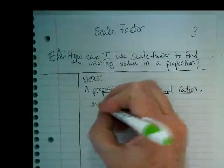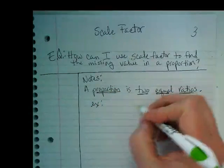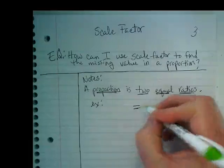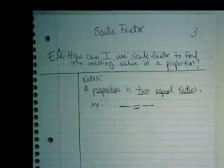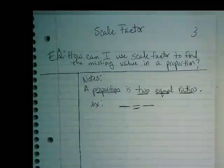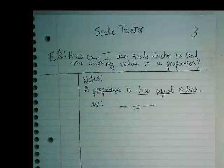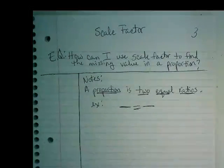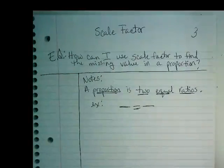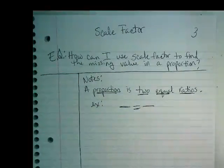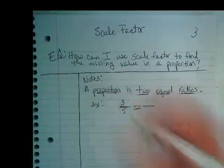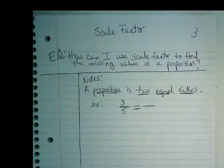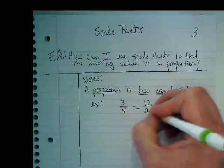We're going to write an example of a proportion. I always think of a proportion like this. It has an equal sign in the middle. Remember equal signs tell us that things are balanced. Whatever's on one side weighs the same or has the same value as whatever's on the other side.